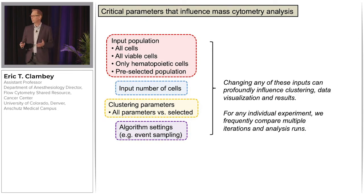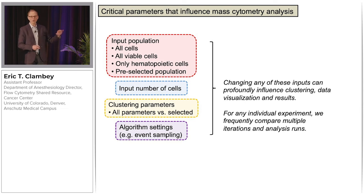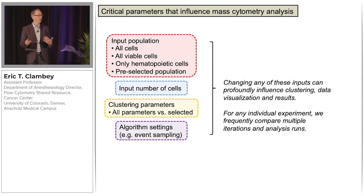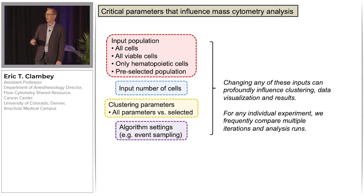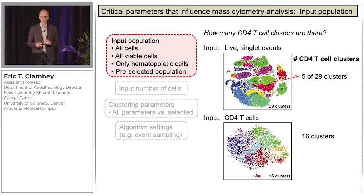Your high-dimensional data analysis can be influenced by multiple inputs, ranging from your input population, input number of cells, the clustering parameters, and the algorithm settings. If you change any of these inputs, it will change how your data is visualized, your clustering results, and may influence your interpretation. Given that this is an iterative process, you are highly likely to go through multiple iterations. Here are a few examples of ways in which your input can change your interpretation.